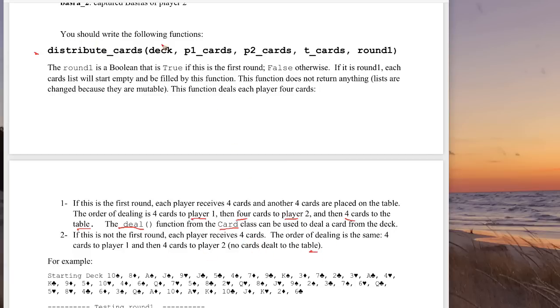So we have a deck that we're dealing from. We're dealing to this list of cards for player one and similarly for player two. And then the ones that go on the table. And then we have one because we have to handle this situation of is it the first round or not. So that's a boolean that you have to work with. And a deck is a card deck. And these guys in here are lists of cards.